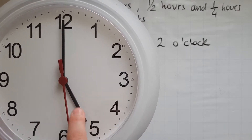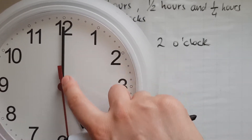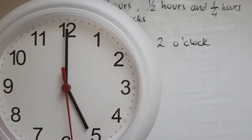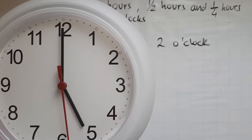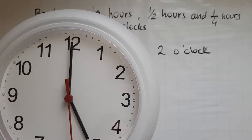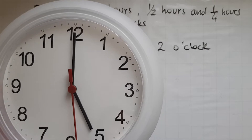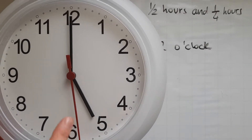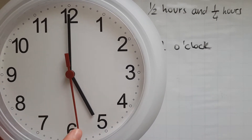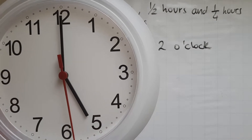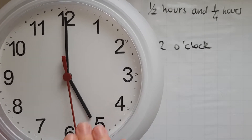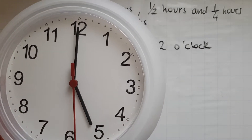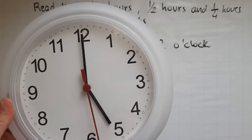If the minutes hand is on twelve, that means it's exactly one o'clock, two o'clock, three o'clock, four o'clock, and so on. The red hand is the seconds hand — I'll ignore this for the time being. It tells you how many seconds have passed.